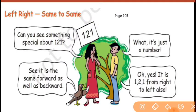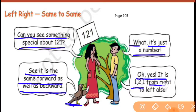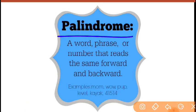Read it from the left — it is 121. Read it from the right — it is 121. This is a special type of number and it is called a palindrome. Let's see what they are talking about. Can you see something special about 121? The bird is saying: see, it is the same forward as well as backward. The boy is saying: yes, it is one-two-one from right to left also.